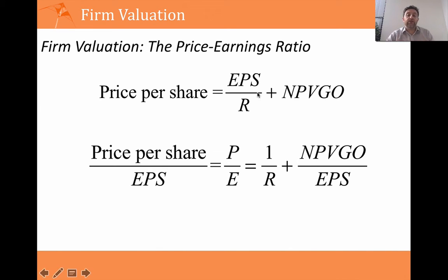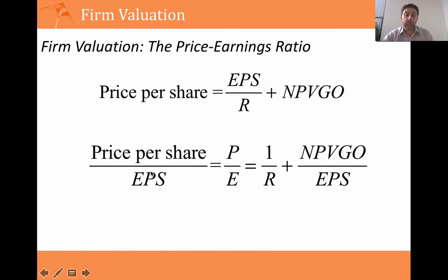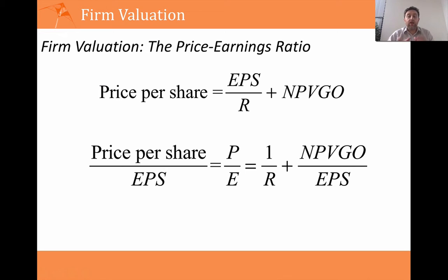If we divide this equation by the earnings per share, we get an insightful new equation: the price per share divided by earnings — the price-earnings ratio — equals one over the discount rate, plus the net present value of the growth opportunities divided by the earnings per share. This tells us two key things: first, the price-earnings ratio goes down as the company's discount rate goes up. We equate the discount rate with risk, so if the equity's risk goes up and the company becomes more risky, the price-earnings ratio will drop.